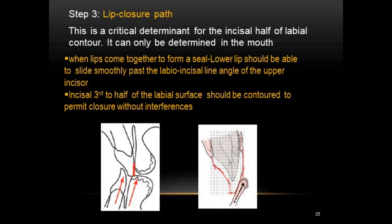Next is the lip closure path — a factor that can only be determined in the mouth and is an important determinant for the incisal half of the labial contour. As the teeth come close, the lower lip should slide smoothly over the labio-incisal angle of the upper incisor without any interference. The incisal third to incisal half of the labial contour should be established properly to permit closure without any interferences — this is possible only with the labial incisal angle of the upper incisors established correctly.